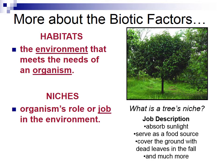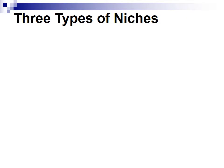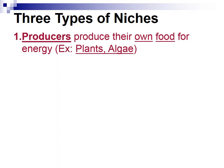So the job description for this tree: it absorbs sunlight, serves as a food source, covers the ground with dead leaves in the fall, and much more. There are three types of niches. The first type is producers — that means you produce your own food for energy. You don't have to eat anything; you basically collect stuff from the environment and make your own food.